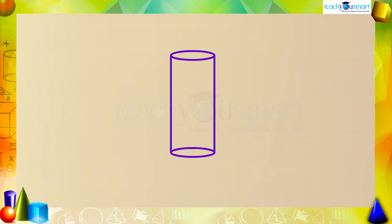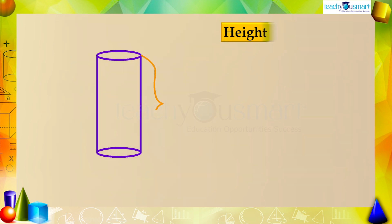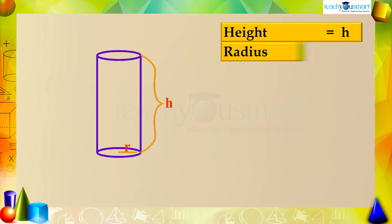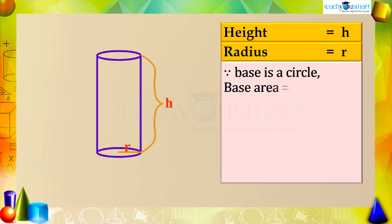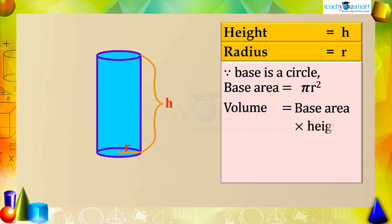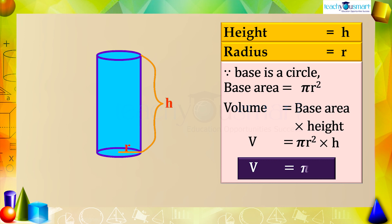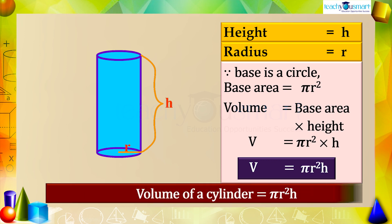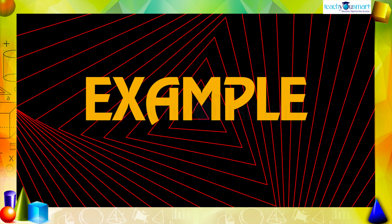Following the same pattern, it is very easy to find the volume of a cylinder. Take a cylinder of height h and the radius of its base r. Since the base is a circle, its area is πr². We know the volume of a cylinder is the product of its base area and height, that is V = πr² × h, which equals πr²h. So the volume of a cylinder equals πr²h.